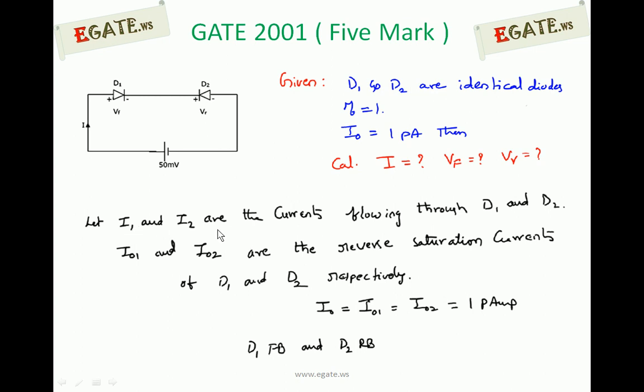We need to calculate current I as well as Vf and Vr. Assume I1 and I2 are the currents flowing through diode D1 and D2, and I01 and I02 are the reverse saturation currents of D1 and D2 respectively. Given that both D1 and D2 are identical diodes, they will have the same reverse saturation current. So I0 is equal to I01 equal to I02, which is equal to 1 pA.